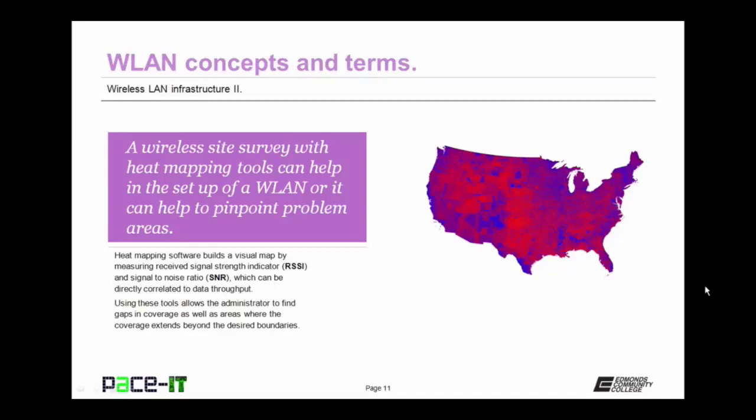The heat mapping software builds a visual map by measuring the received signal strength indicator, or RSSI, and the signal-to-noise ratio, or SNR, which can be directly correlated to data throughput. Using these tools allows the administrator to find gaps in coverage as well as areas where coverage extends beyond the desired boundaries, helping to create a more efficient and secure network.